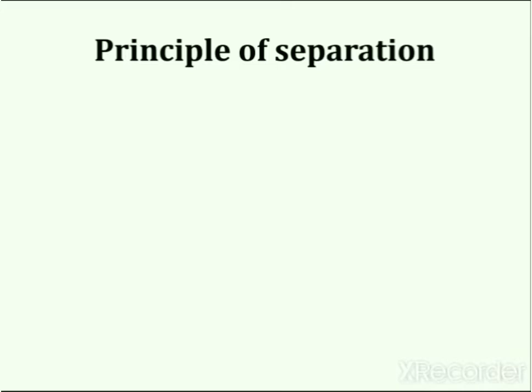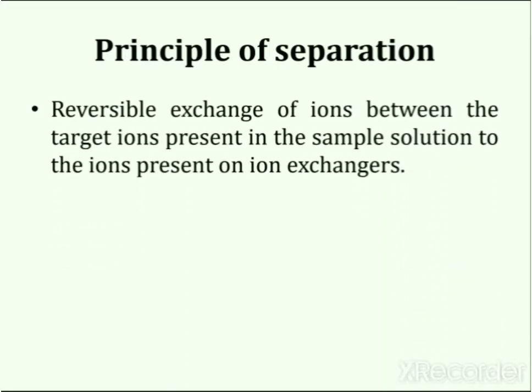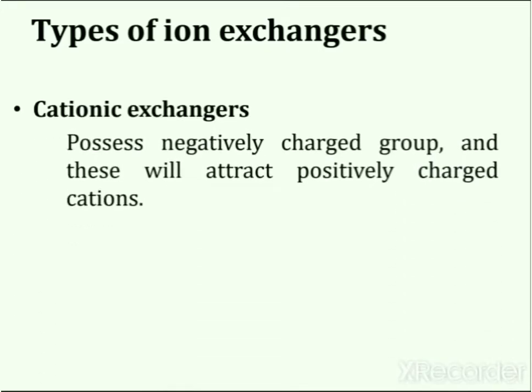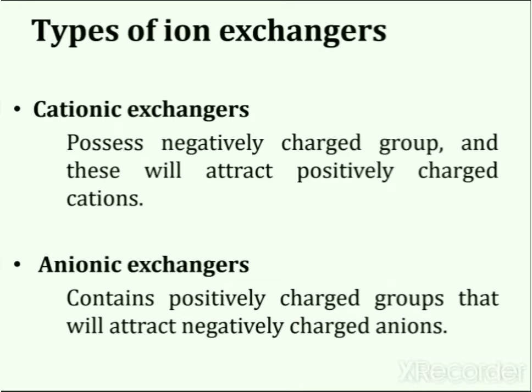The principle of separation in ion exchange chromatography is based on the reversible exchange of ions between the target ions present in the sample solution and the ions present on ion exchangers. In this process, two types of exchangers are used: cationic exchangers and anionic exchangers. Cationic exchangers possess negatively charged groups and will attract positively charged cations. These exchangers are also called acidic ion exchange materials because their negative charges result from the ionization of acidic groups.